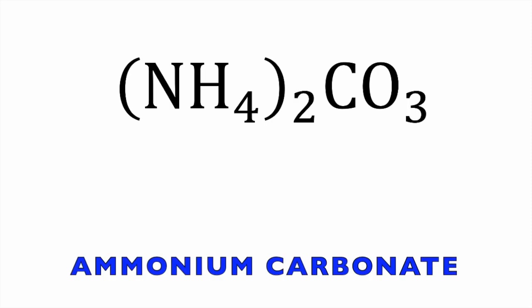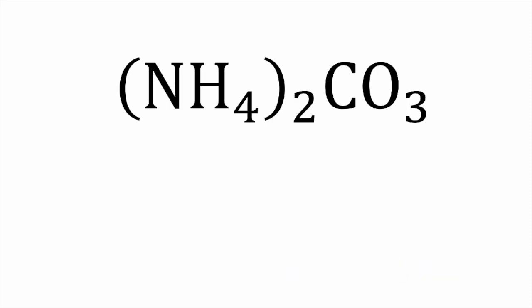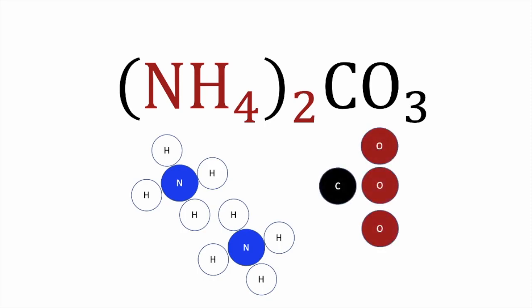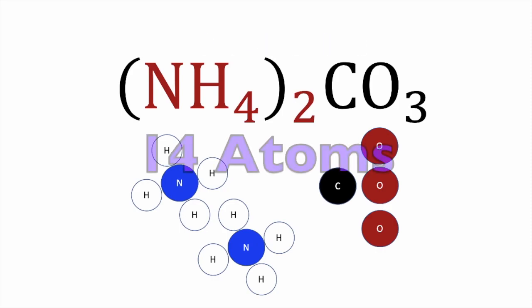Now let's do another example with ammonium carbonate. The chemical formula shows NH4 in parentheses with a subscript 2, which means we have two of these ammonium groups, and then CO3. NH4 is the chemical name for ammonium, and these atoms are tightly bonded together using covalent bonds. So we have two ammonium groups, one carbon, and three oxygens. Totaling up all our atoms: five from the first ammonium group, five from the second, one carbon atom, and three oxygen atoms gives us 14 atoms.